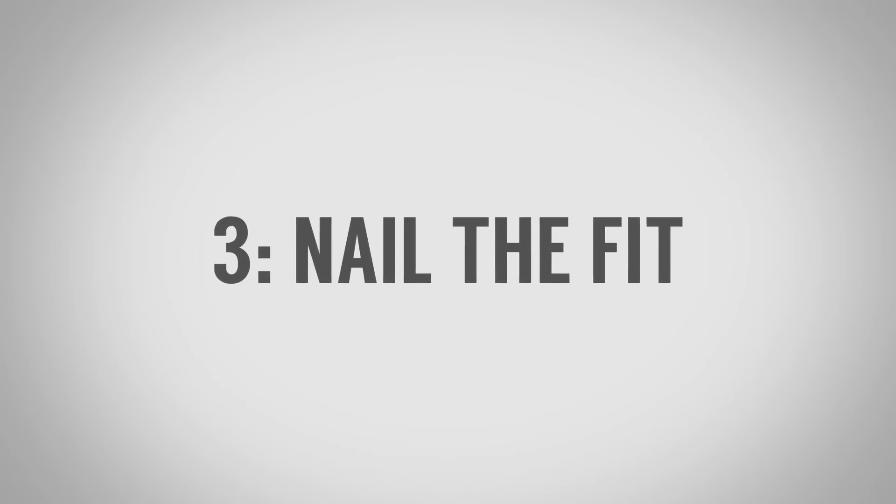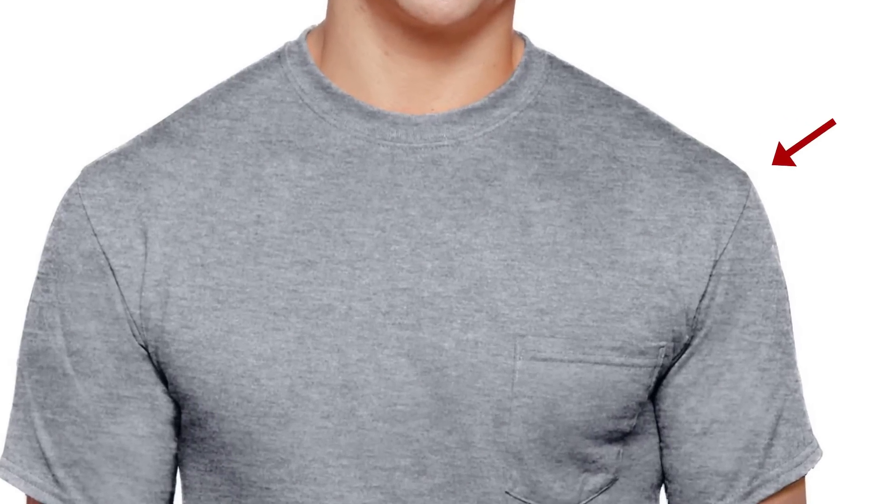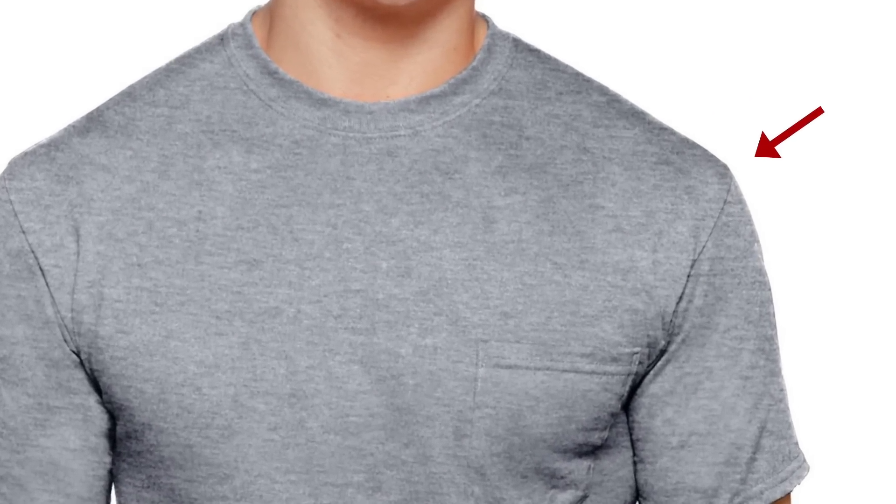Tip number three, nail the fit. All right, guys, you don't want to do alterations on a t-shirt. Make sure when you buy it, it actually fits you. These are the key areas that you want to look at. Number one, look at the shoulders. Make sure the shoulder point is actually at your shoulder point. If it starts to go down the arm, then realize you're wearing a t-shirt that is too big.